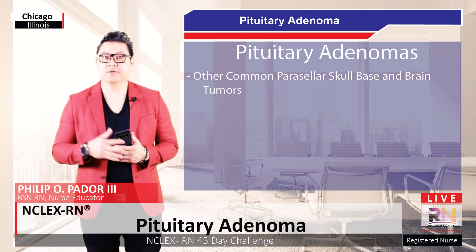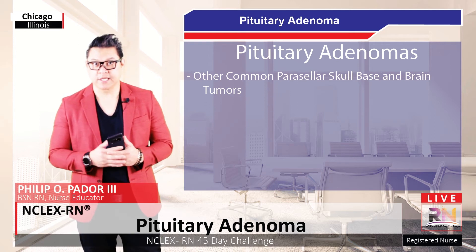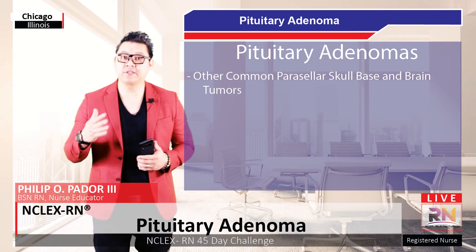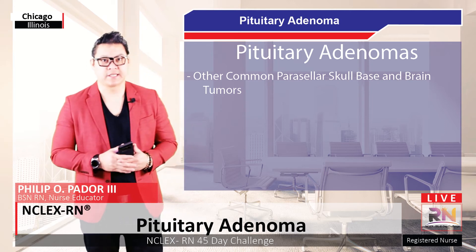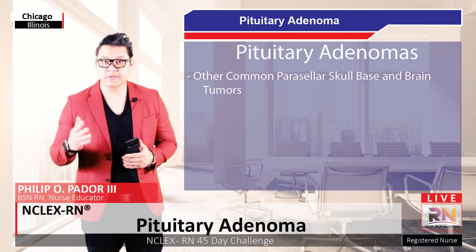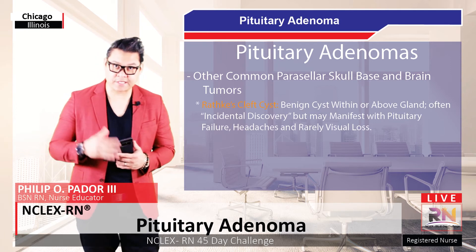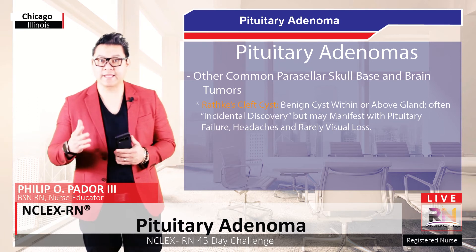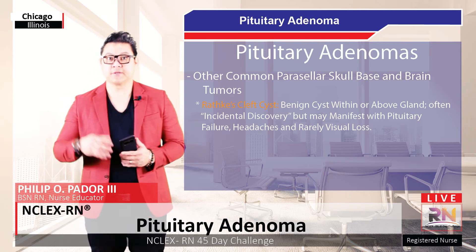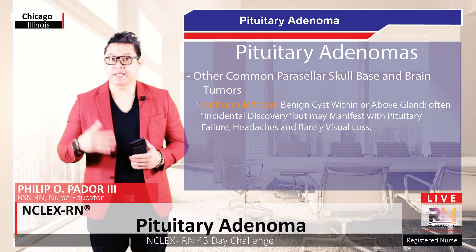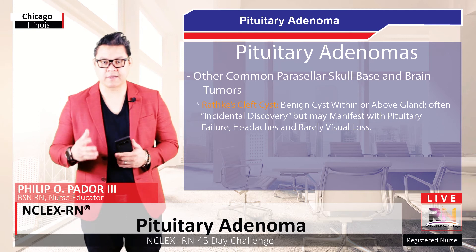Symptoms of mass effect may also occur in patients with endocrine active tumors, particularly those with acromegaly and prolactinomas. Other growths that can occur around the pituitary gland include Rathke's cleft cysts, which are often within the gland and do not always warrant treatment, but on occasion can lead to headaches, visual loss, and pituitary failure.